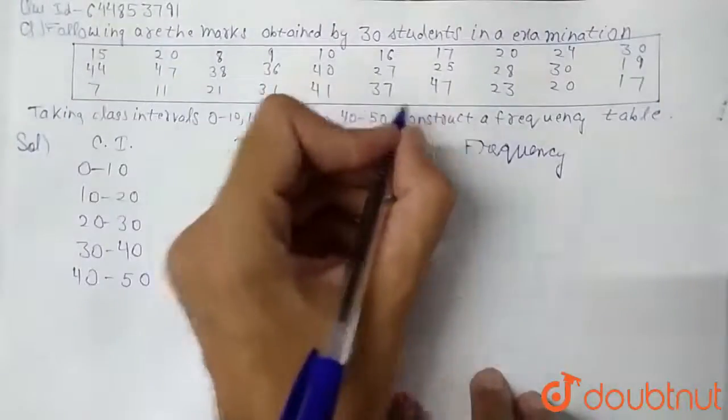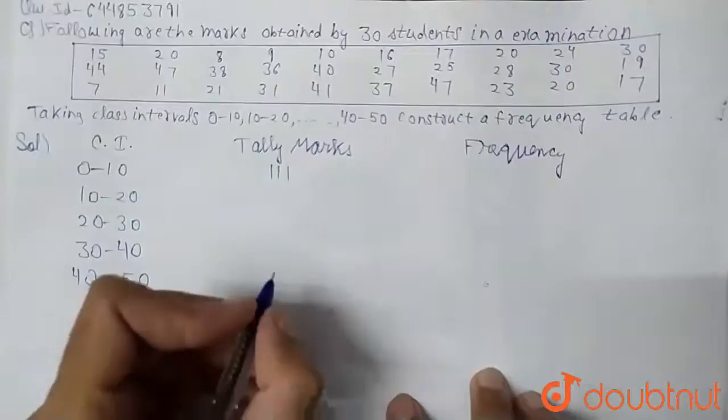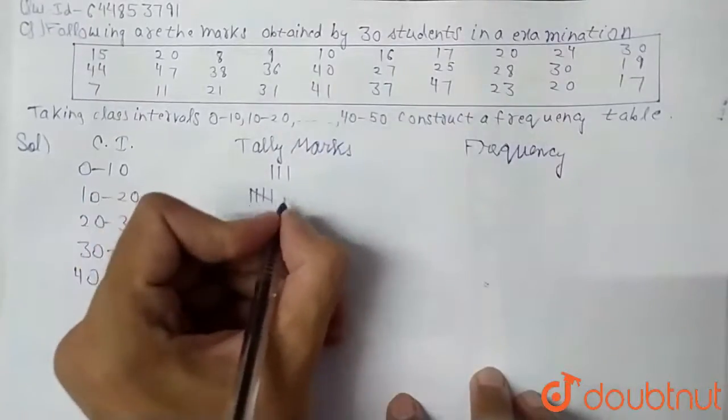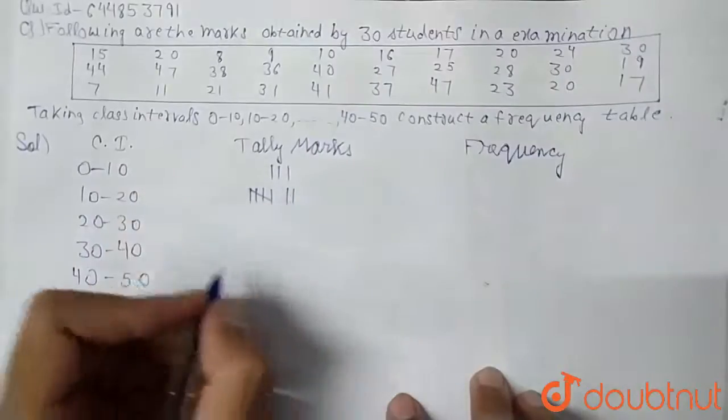Now, if we check from 10 to 20 class interval, we have 7 values, so this is 7: 1, 2, 3, 4, 5, 6, 7.